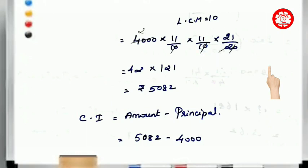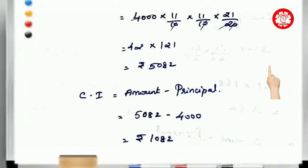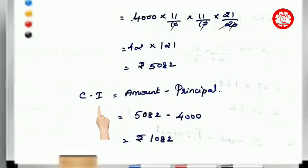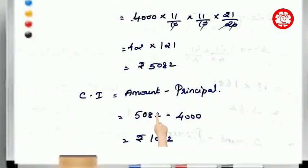Now, compound interest equals amount minus principal. So CI is equal to 5082 minus 4000. This gives us the compound interest.